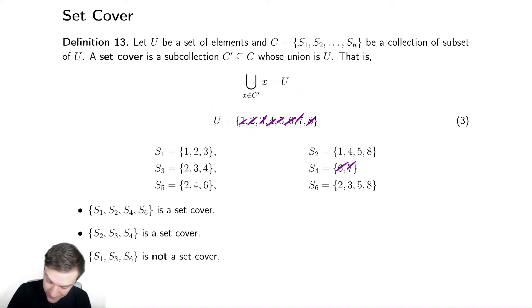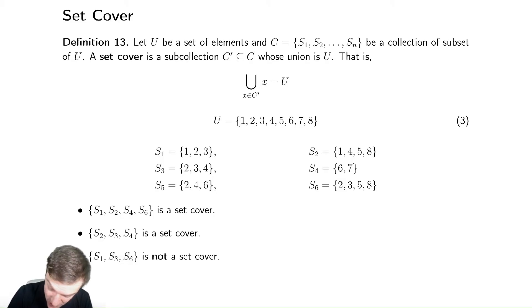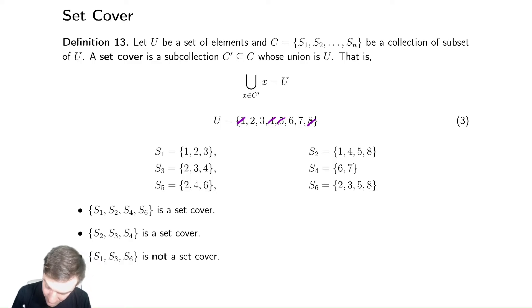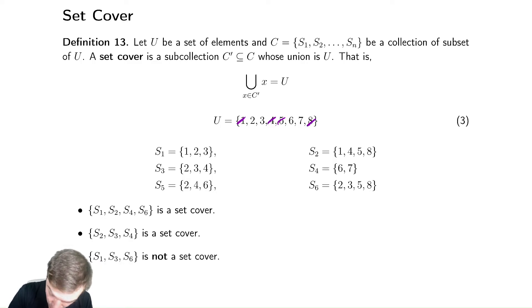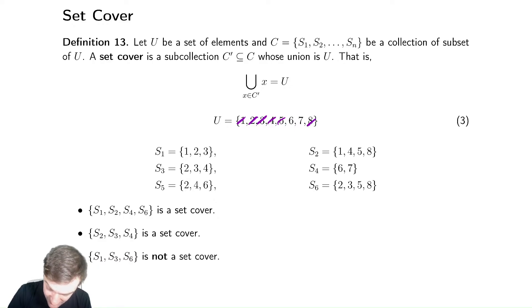Let's check the next one, which is S2, S3, S4. S2 has 1, 4, 5, and 8. S3 has 2, 3, and 4. And S4 has 6 and 7, so that's also a set-cover.